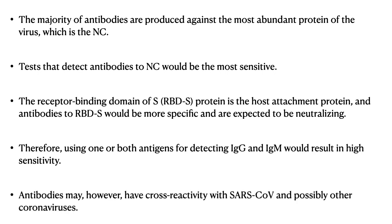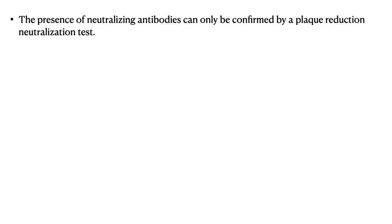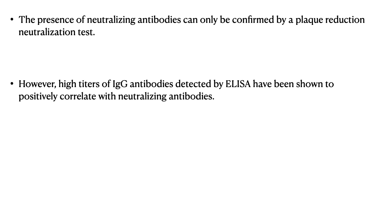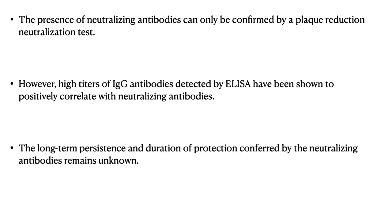Antibodies may have cross-reactivity to SARS-CoV and other coronaviruses, so we cannot say they are specific only to SARS-CoV-2 infection. The presence of neutralizing antibody can only be confirmed by plaque reduction neutralizing test; however, high titers of IgG detected by ELISA have been shown to positively correlate with neutralizing antibodies. Therefore, if a very high titer is present, specific tests to establish neutralizing capacity may not be needed. The long-term persistence and duration of this protection remains unknown.